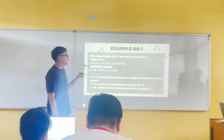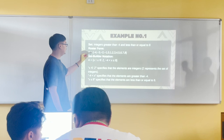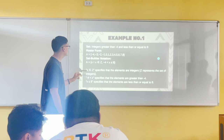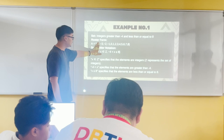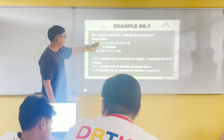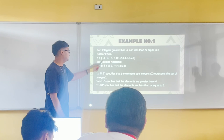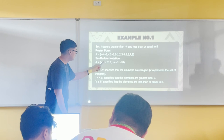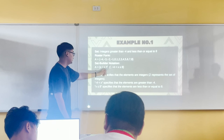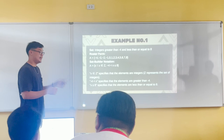Now we have another example: integers greater than negative 4 and less than or equal to 8. The roster form is simple — we write down all the elements: negative 3, negative 2, negative 1, up to positive 8. Negative 4 is not included. The set builder notation is: set A = {x | x ∈ Z, −4 < x ≤ 8}.